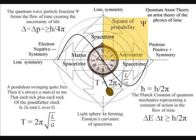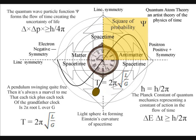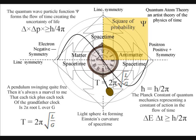We have 4 pi in this equation because the uncertainty principle is formed by the quantum wave particle function, or probability function, of quantum mechanics, that expands out as an inverse sphere.